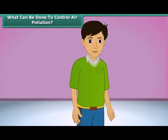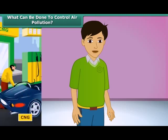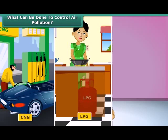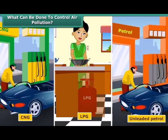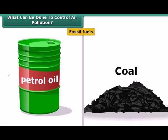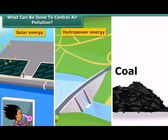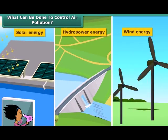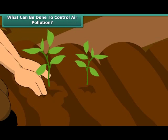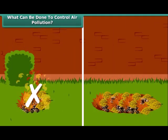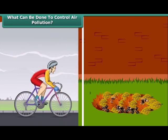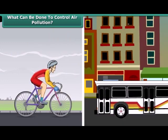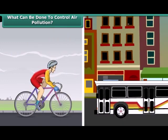What should we do to reduce air pollution? We can use clean fuels such as CNG, LPG, and unleaded petrol. Instead of fossil fuels, we can use solar energy, hydropower, and wind energy. We can also plant new trees. Rather than burning dry leaves, we can put them in a compost pit. We can walk more, switch over to bicycles for small distances, and use public conveyances.